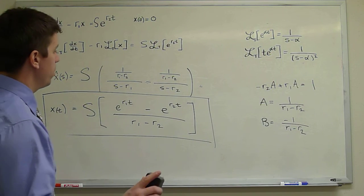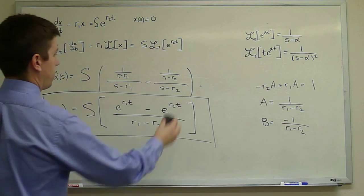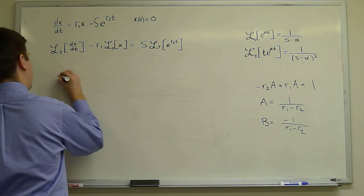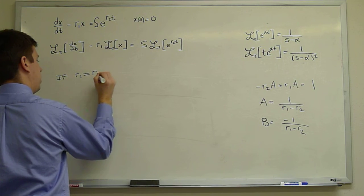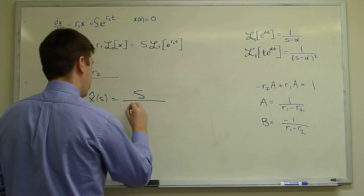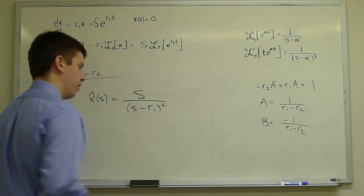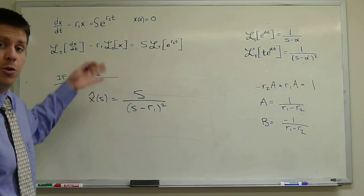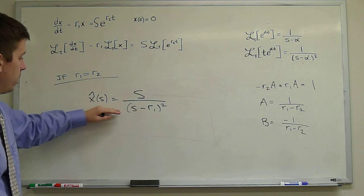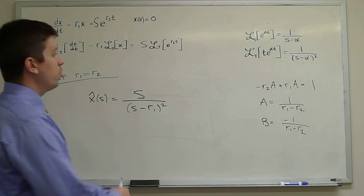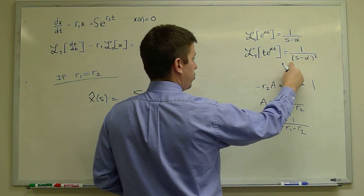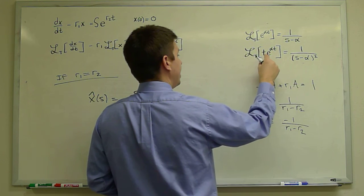Now, one more word about the resonant case. What if R1 equals R2? If R1 had equaled R2, we would have gotten x̂(S) equals capital S over (S minus R1) squared, where R1 equals R2 — they would have both shown up in the same place. And if we had gotten that, we could have looked up a different inverse transform on a table: the inverse Laplace transform of 1 over (S minus α) squared is t·e^(α·t).